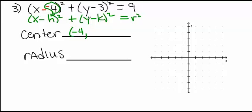y minus k. k is 3. I already have subtraction in place, so k is 3. There's the center. And r squared, r would be 3. 3 squared is 9.